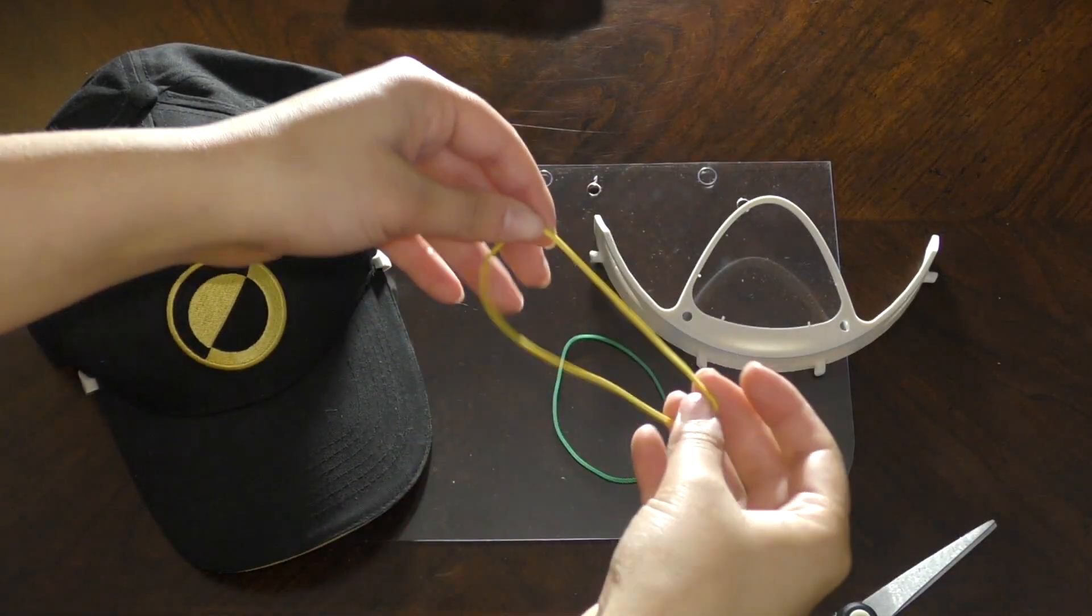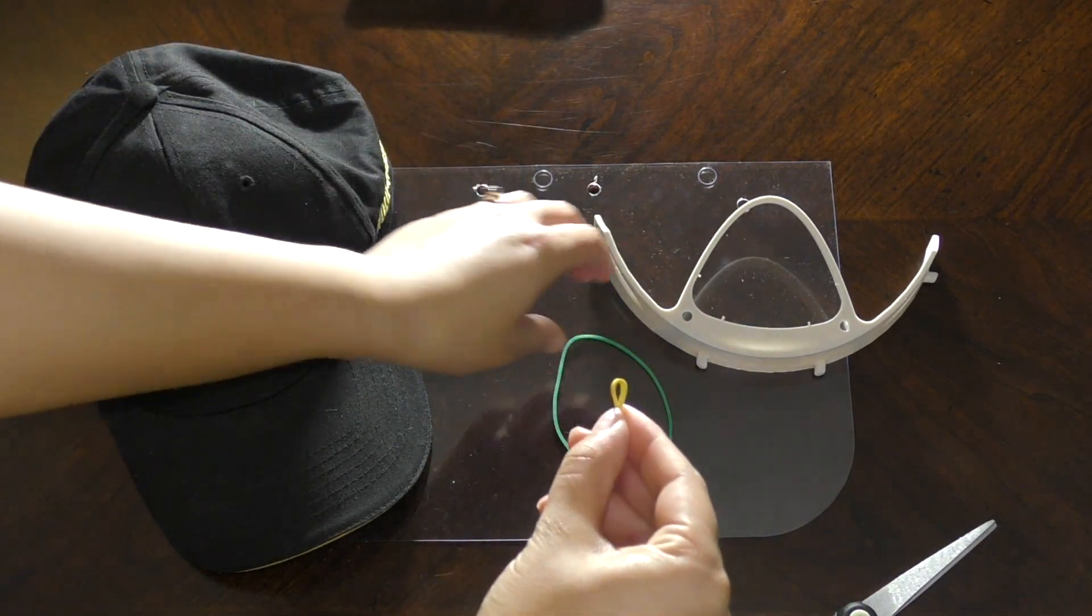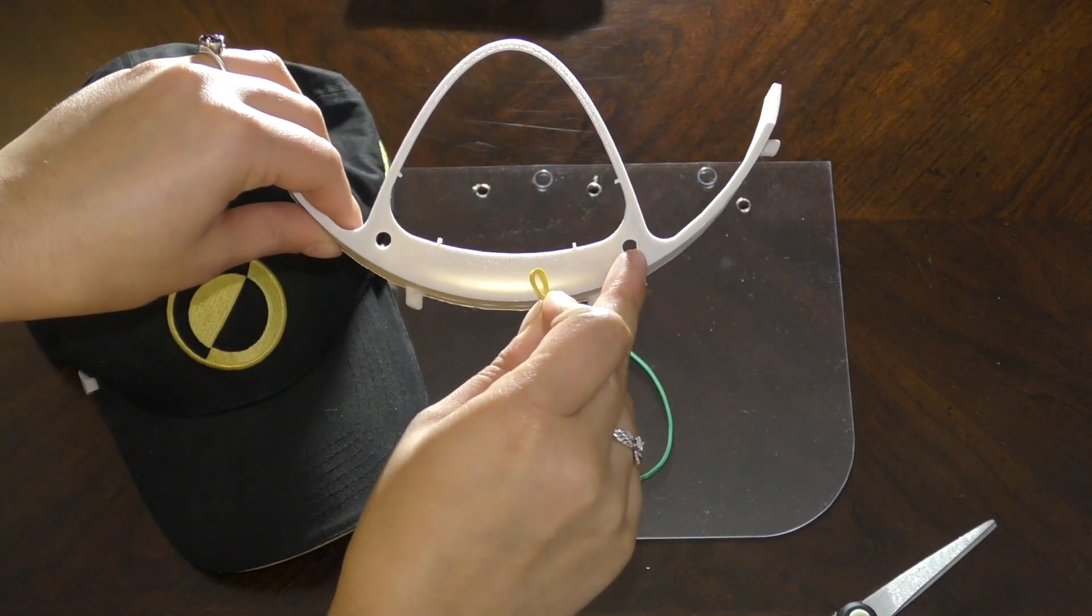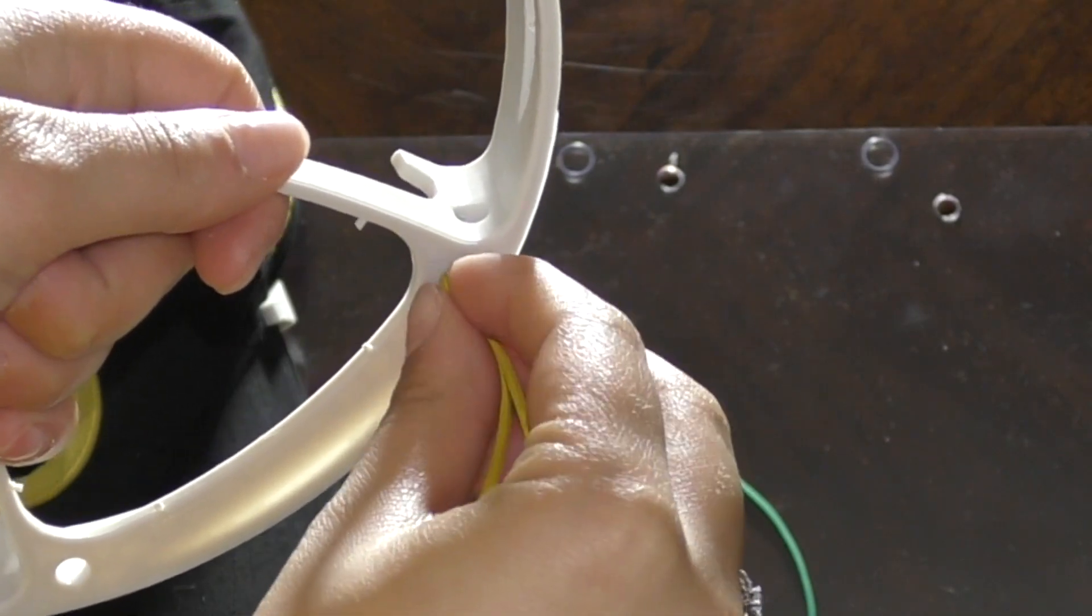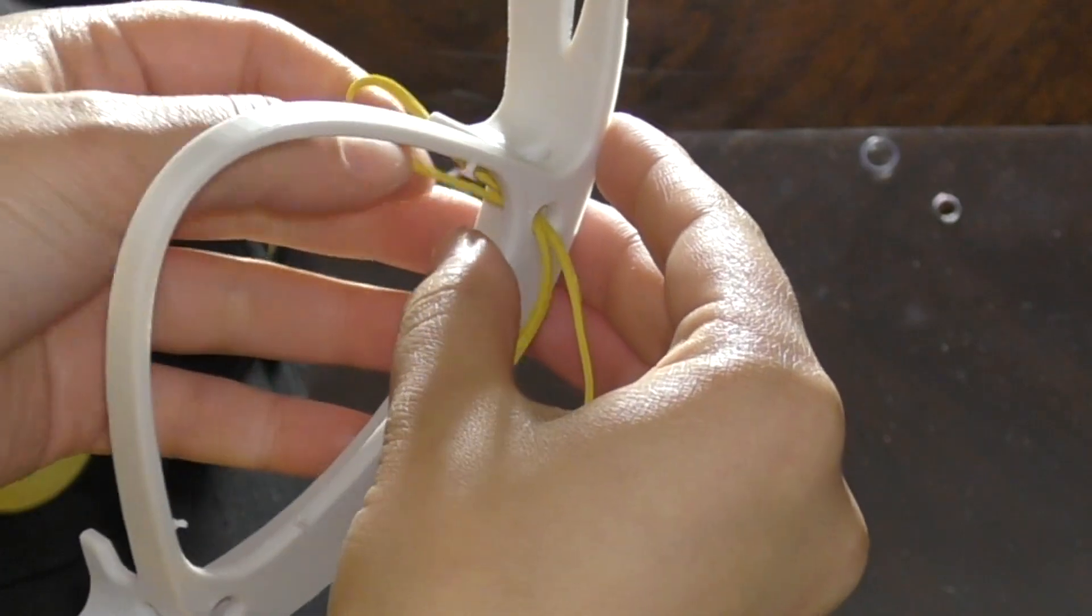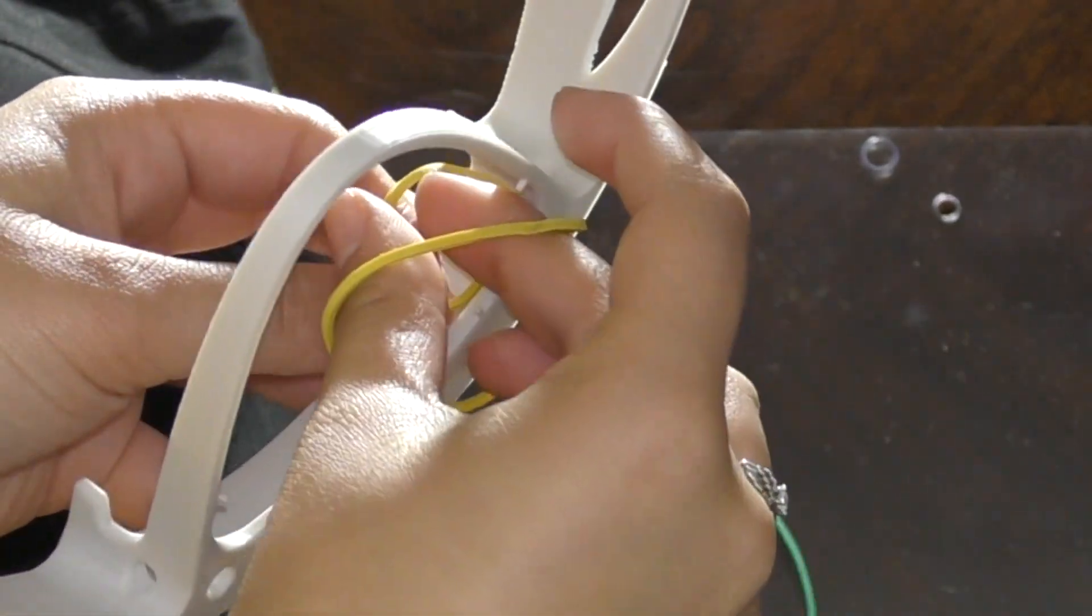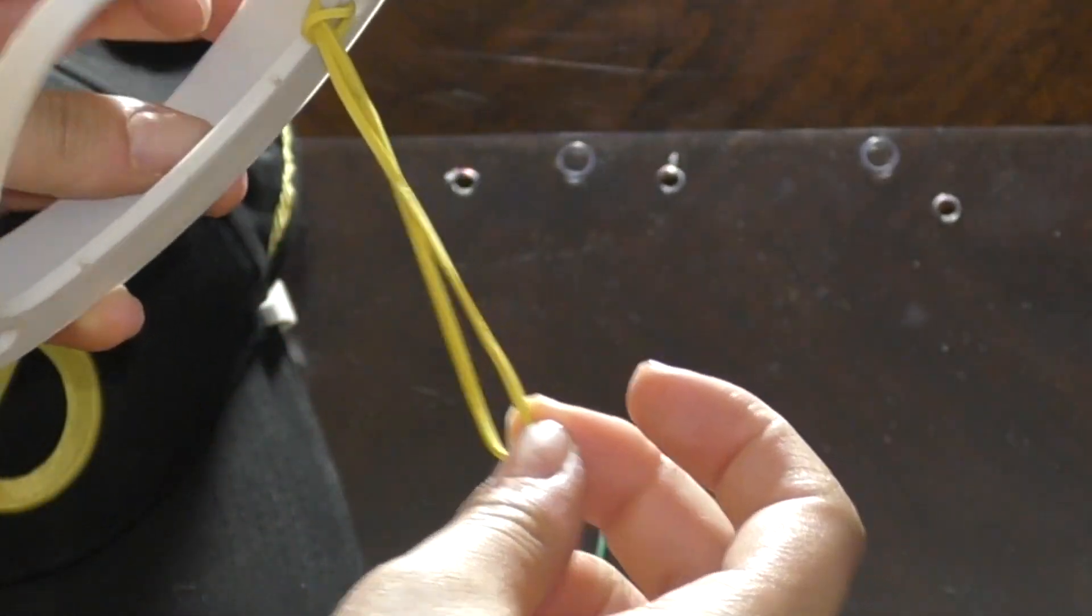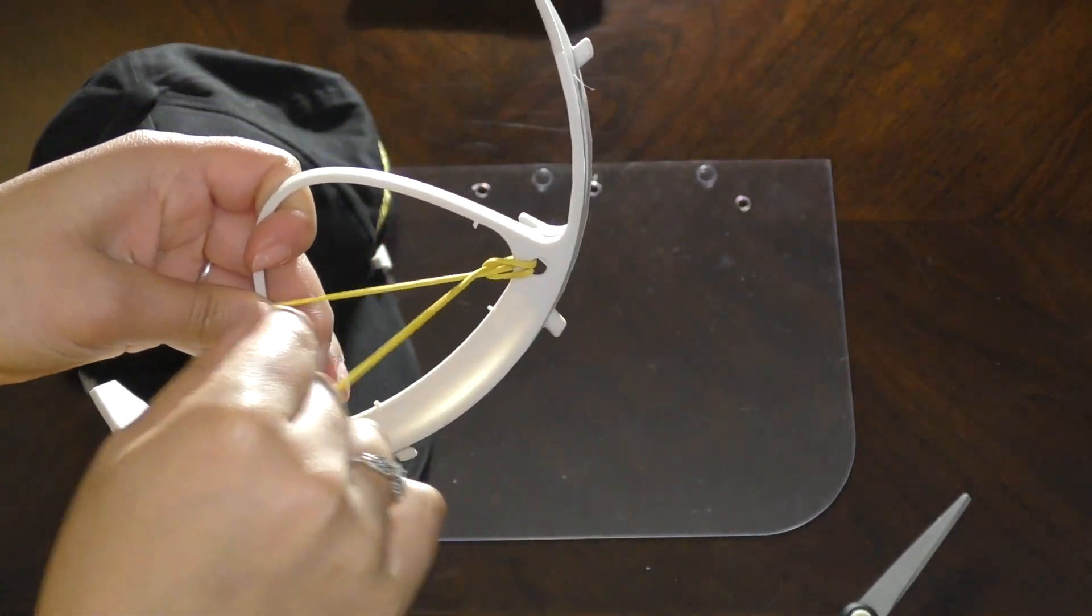Next you're going to need to take the elastic bands and put it in a loop like this and put it through the holes in the top of the base. String it through then go through one of the loops, grab the other and pull through to make a simple knot to attach it to the base. Do this on the other side and your finished result will be this.